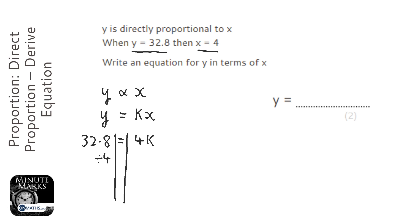I use my calculator: 32.8 divided by 4, and it says that the answer is 8.2. So k equals 8.2.